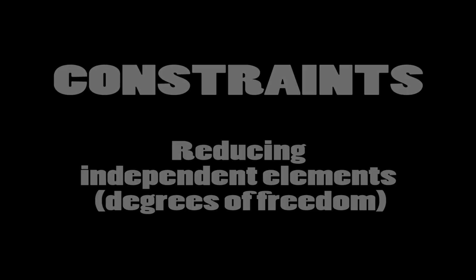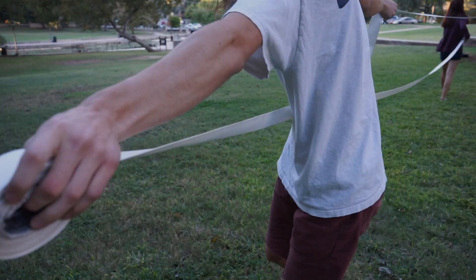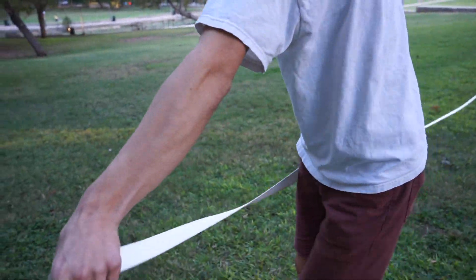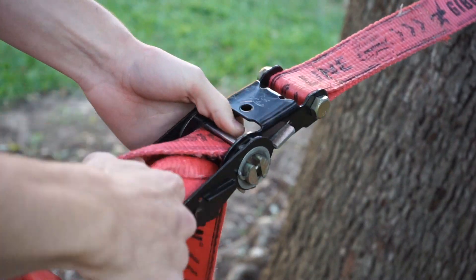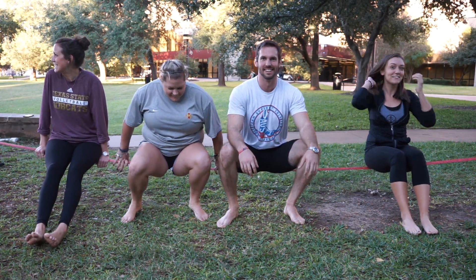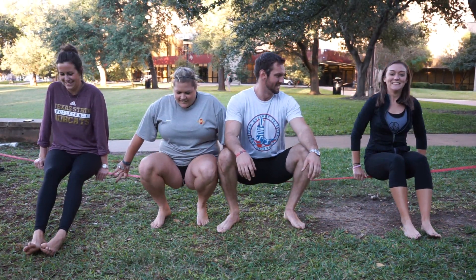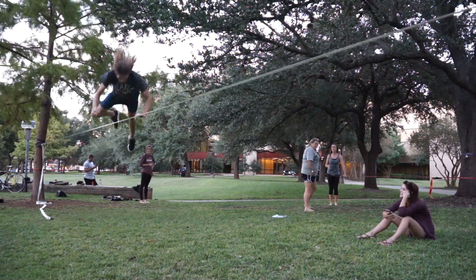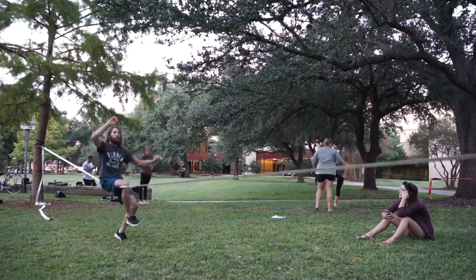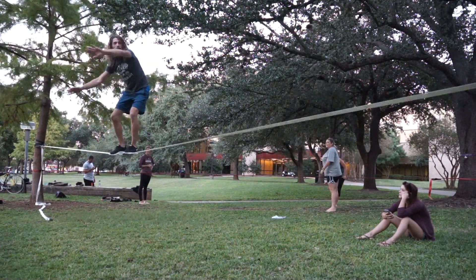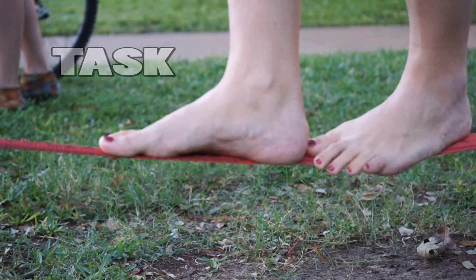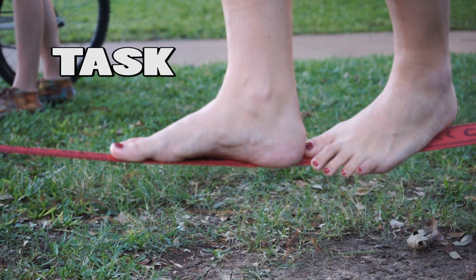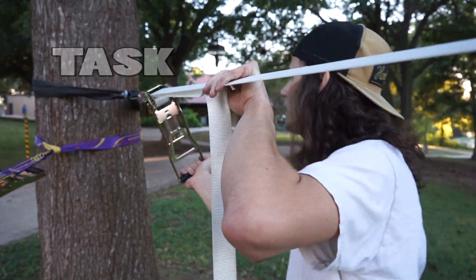Let's not forget why we are here — to learn about dynamic systems theory and the combination of all three constraints. There is nothing better to show this than the leisure sport of slacklining. Task constraints can be seen in various measures like the distance of the rope, height from the ground, or the amount of tension in the line.